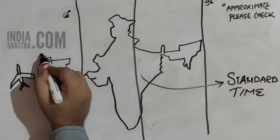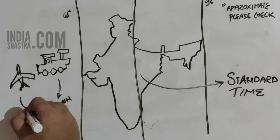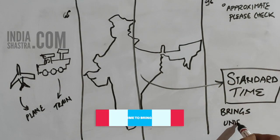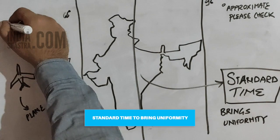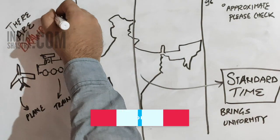For trains, flights and everything, to bring consistency and uniformity, countries use standard time zones. This system has some drawbacks which we will talk about in a different video.